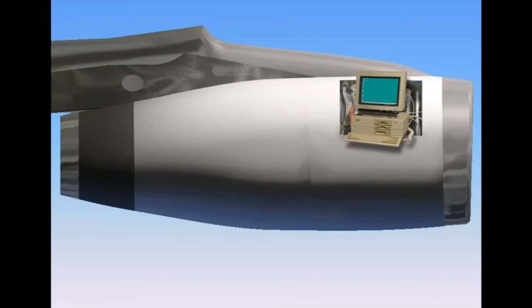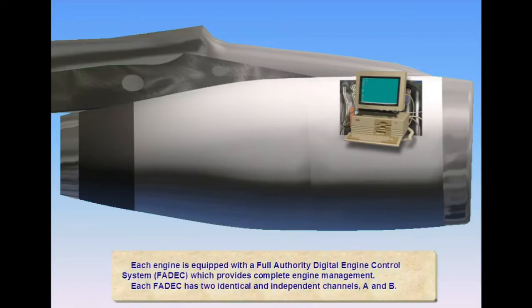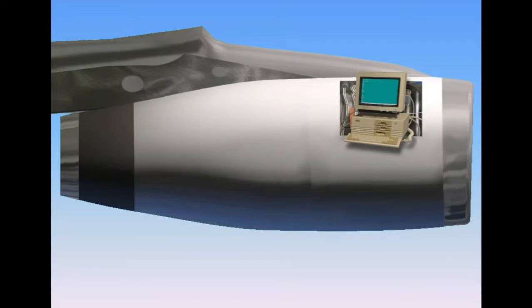Each engine is equipped with a full-authority digital engine control system, FADEC, which provides complete engine management. Each FADEC has two identical and independent channels, A and B. The FADECs are powered by aircraft buses for five minutes after power-up, at which time they go to sleep. During engine start, each FADEC becomes powered by a dedicated alternator located on the accessory gear case. Therefore, even in the event of total power failure, the pilot still has full control over the engine.